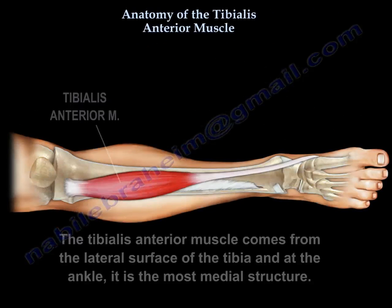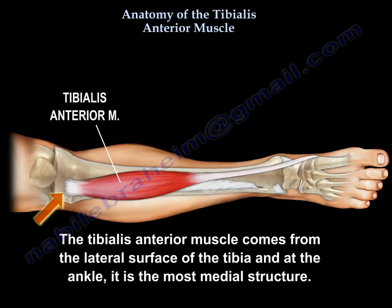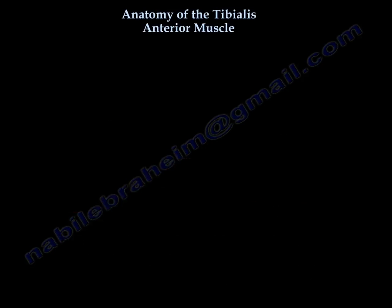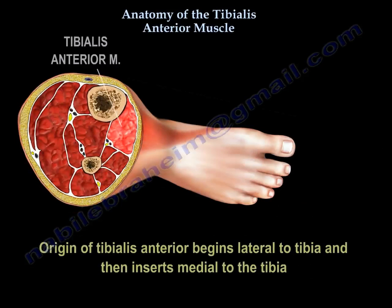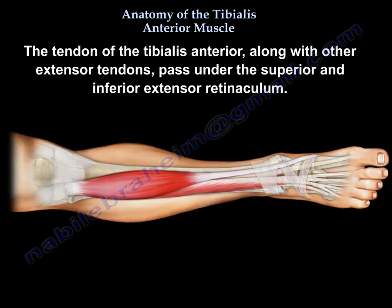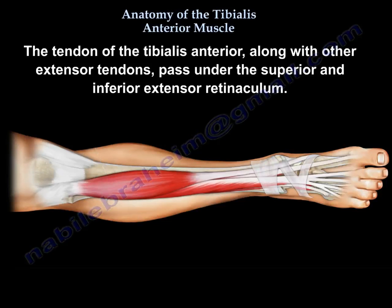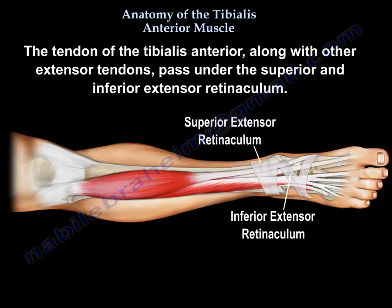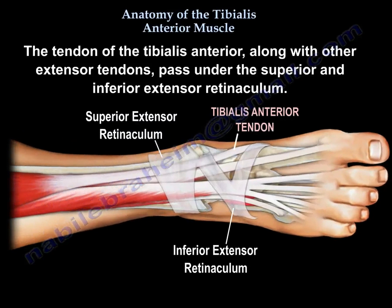The tibialis anterior muscle comes from the lateral surface of the tibia and at the ankle it is the most medial structure. The muscle begins lateral to the tibia and then inserts medial to the tibia. The tendon of the tibialis anterior along with other extensor tendons passes under the superior and inferior extensor retinaculum.